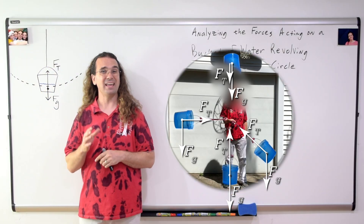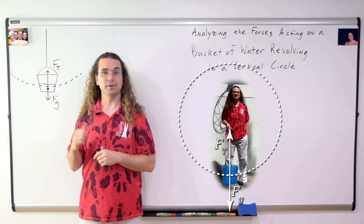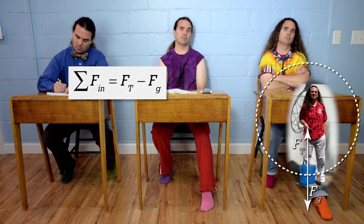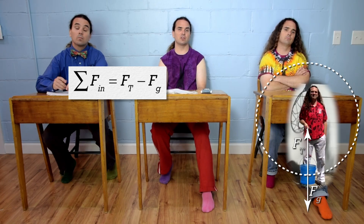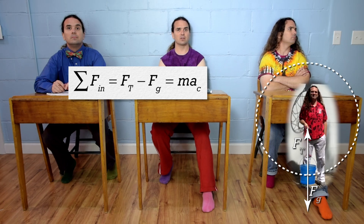Let's start by analyzing the situation with the bucket at the bottom. Bobby? Well, we've drawn the free-body diagram. None of the forces need to be broken into components. So, the net force in the inward direction equals force of tension minus force of gravity, which equals mass times centripetal acceleration.